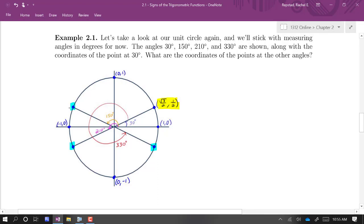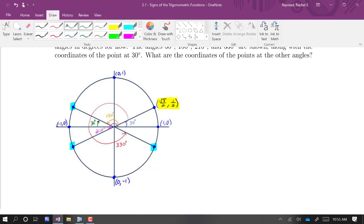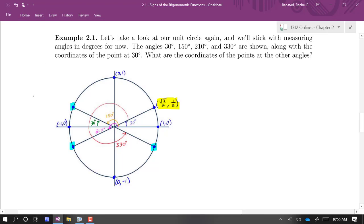If I go over here in the second quadrant at 150 degrees, well, 150 degrees is 30 degrees back from the 180. So this is, in fact, just a reflection across the y-axis of the point they gave us. That means that the x coordinate is going to be negative root 3 over 2, and it'll have the same y coordinate. So that's the coordinates of this point.